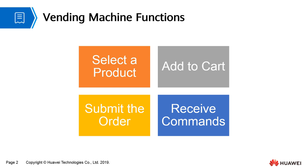We use the BarePi development board to realize the vending machine functions. You can press F1 on the development board to select a product and press F2 to add the product to the cart. When F1 is under Submit, press F2 again to submit the order. The developer board can also receive commands and change the product sequence based on the big data analysis result.